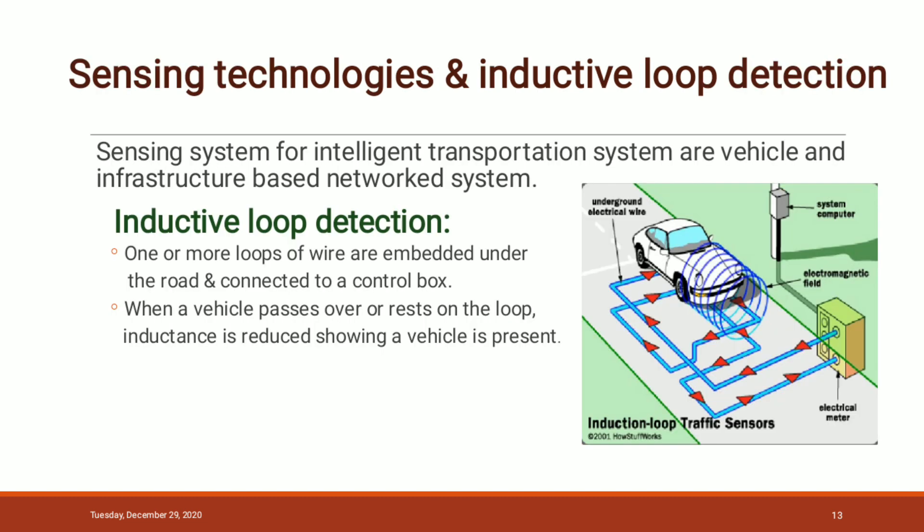The next one is sensing technology and the inductive loop detection method. In the inductive loop detection method, as shown in the figure, inductive loops — loops of electrical wire — are placed in or buried in the road bed to detect vehicles as they pass through the loops. The magnetic field counts the number of vehicles passing over the loops, and then data is transmitted through an electrical meter to the system computer and then to the central server.